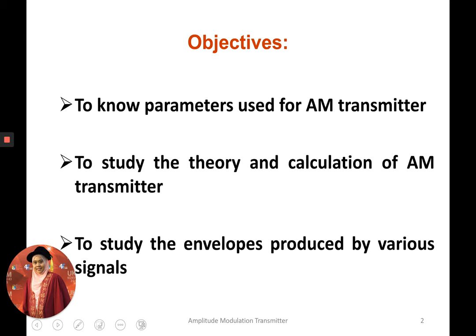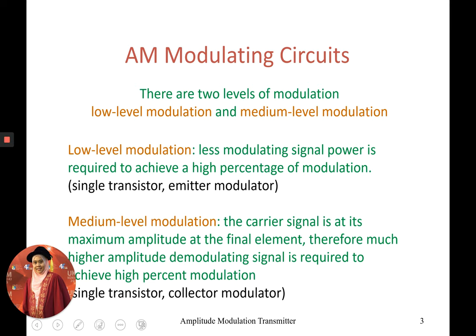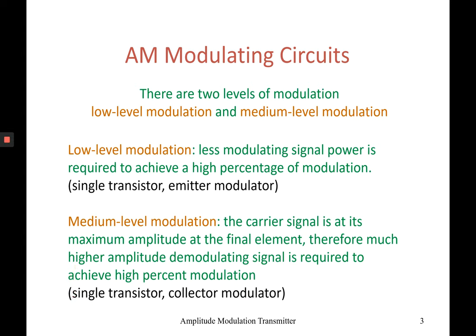For this video, I will explain more on the practicality — how we can design our own transmitter. For AM modulating circuits, there are basically two levels of modulation. One we call low level, and another one is medium level. We don't have high level modulation because we don't want the process to produce over-modulation in modulation index.